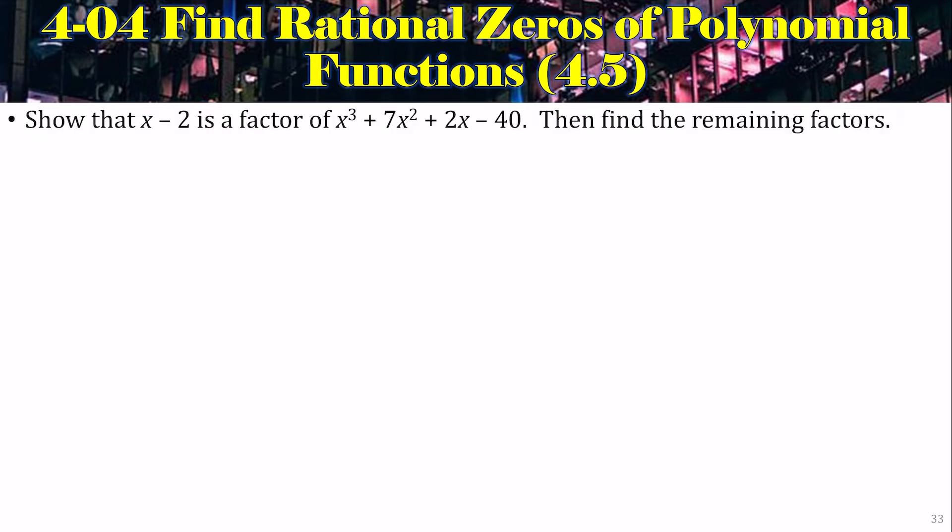Alright. We're going to show that x minus 2 is a factor of this function and then find the remaining factors. So first thing, let's do synthetic division. So we'll put the 2 in our box and then have our coefficients. It's 1x cubed, 7x squared, 2x, and minus 40. Bring down the 1 and multiply. Add. Multiply, 2 times 9. Add is 20. Multiply, 2 times 20 is 40. Add. Look at that, we've got a 0. Hey, it was a factor.